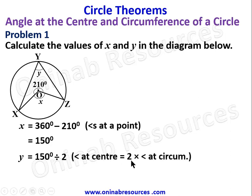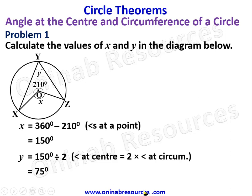The angle at the center is twice the angle at the circumference. If we have the angle at the center and are looking for the angle at the circumference, we divide by 2. If we have the angle at the circumference and are looking for the angle at the center, we multiply by 2. So 150 divided by 2 gives 75 degrees. Problem one is complete.